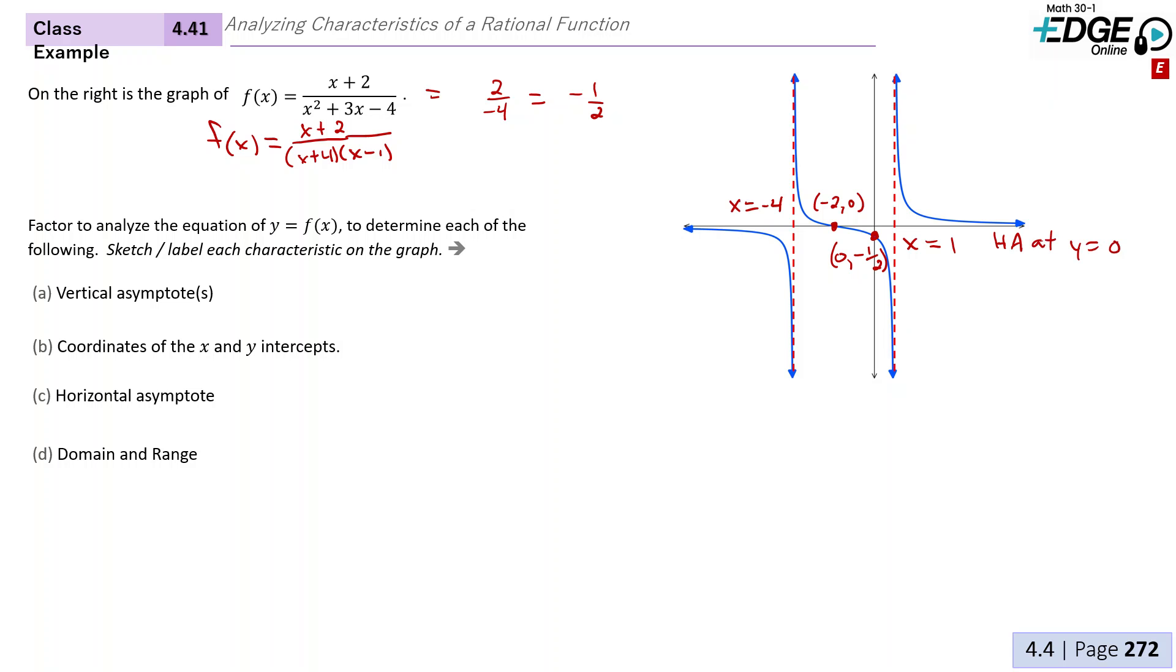Now the domain and the range. Well, the domain will just be excluding our vertical asymptotes. So we'll say x such that x cannot equal -4 or 1.